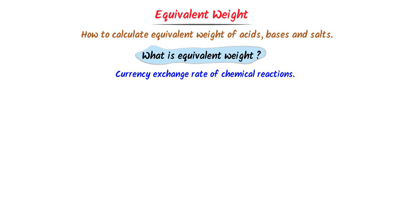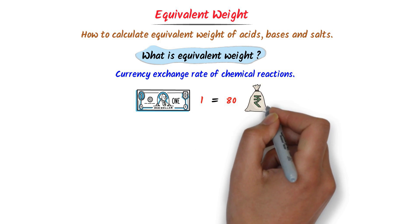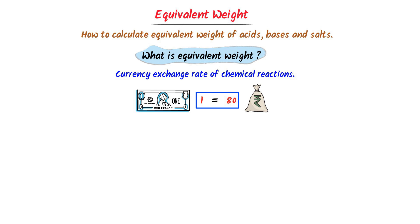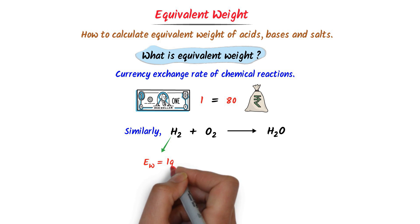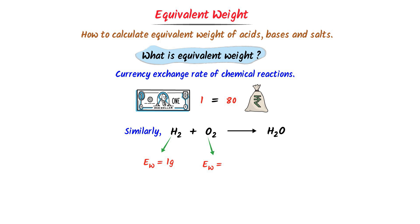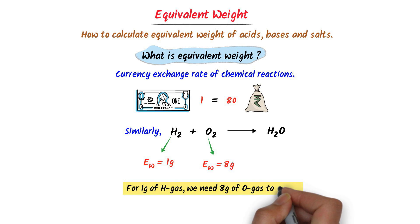For example, 1 US dollar is equal to 80 rupees — it means that for 1 US dollar, you get 80 rupees. Similarly, consider this chemical reaction. When hydrogen gas and oxygen gas react together, they form water H2O. In this reaction, the equivalent weight of hydrogen gas is 1 gram and the equivalent weight of oxygen gas is 8 gram. It means that for 1 gram of hydrogen gas, you need 8 gram of oxygen gas.